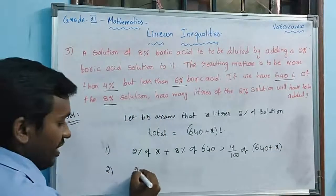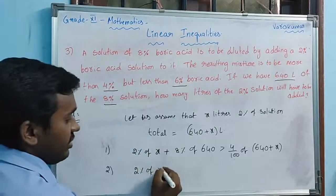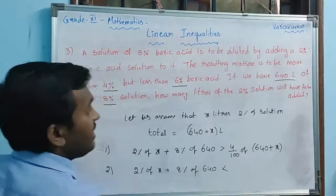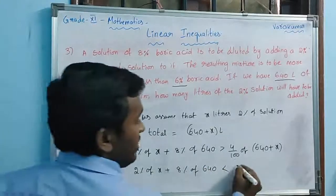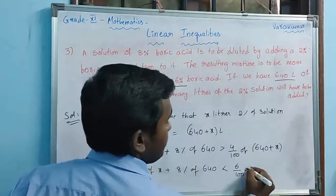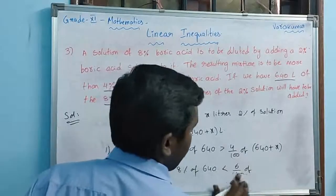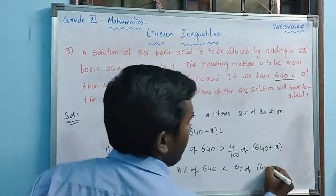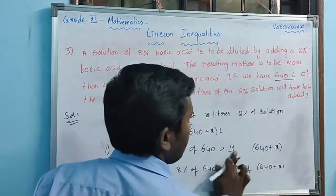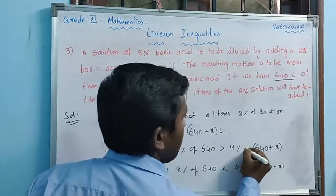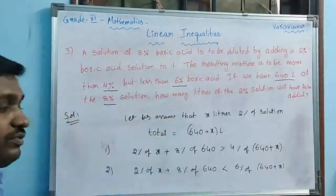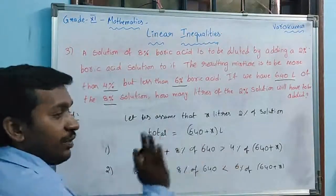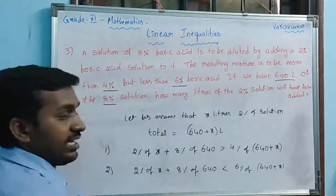Condition number two: 2% of x added to 8% of 640, then the resultant is less than 6% of (640 plus x). So condition one is greater than 4%, and condition two is less than 6%.